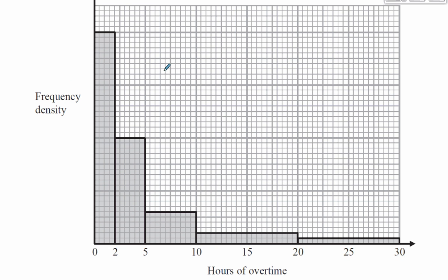There are 40 staff altogether, and we want to find the number that claimed less than 10 hours. We need to find the area of the first three bars as a proportion of the whole area of all the bars. That fraction of the 40 total employees will give us the number of people who claimed less than 10 hours of overtime. So we need to work out the area of all the bars.